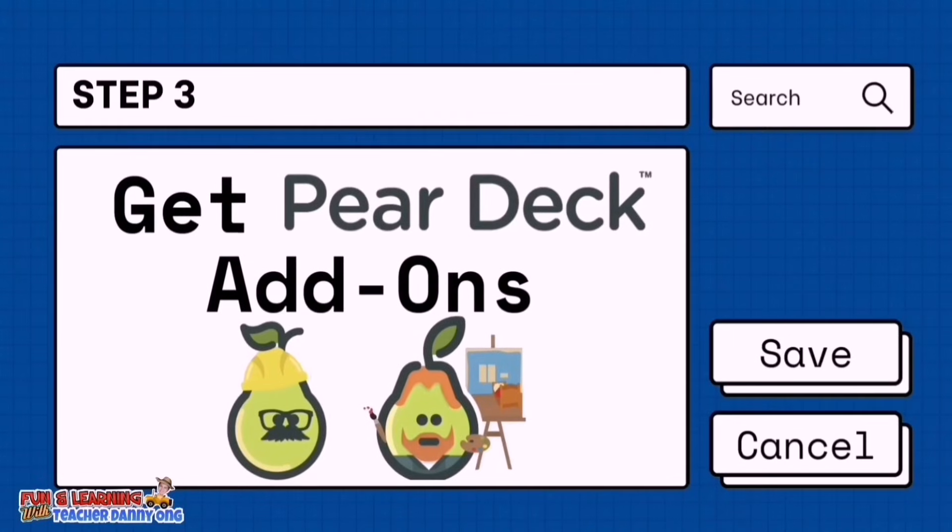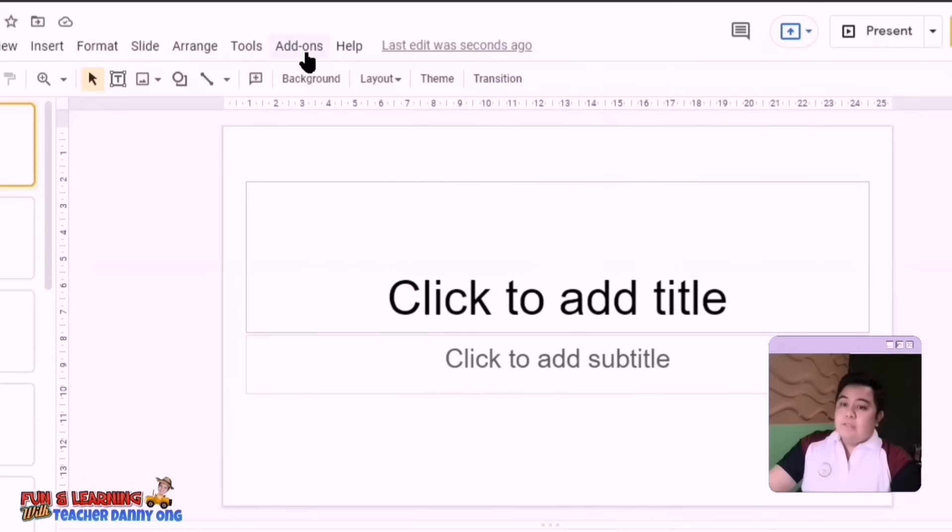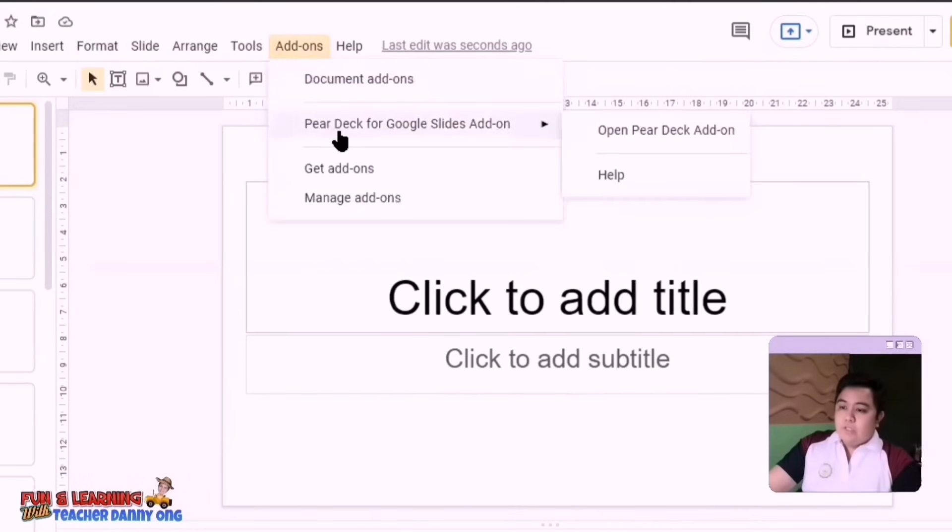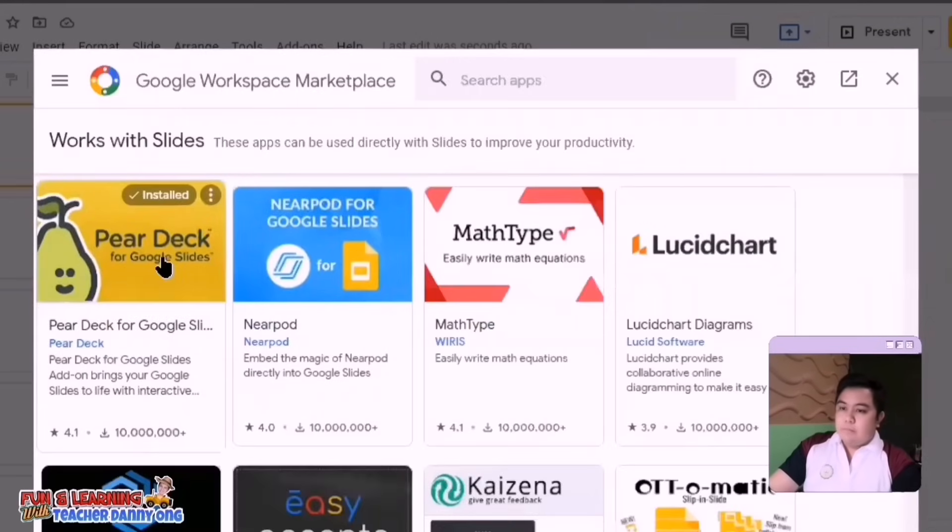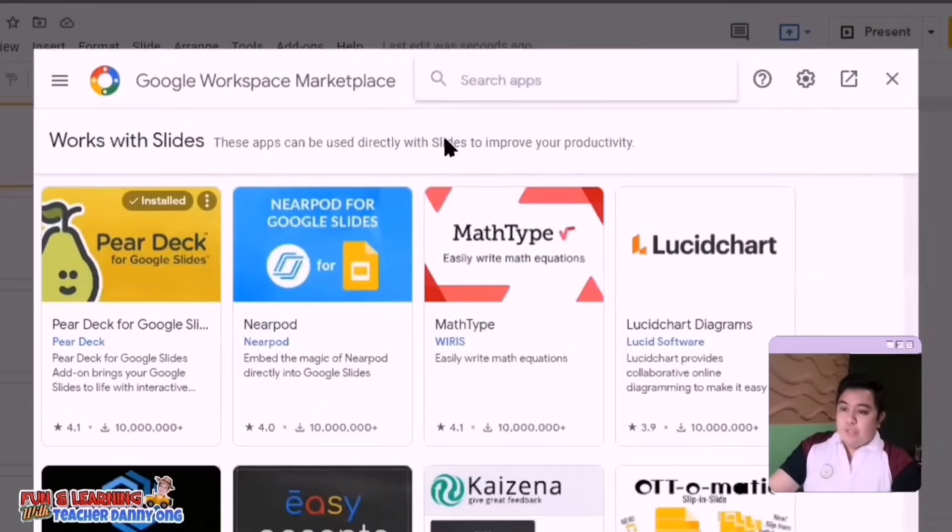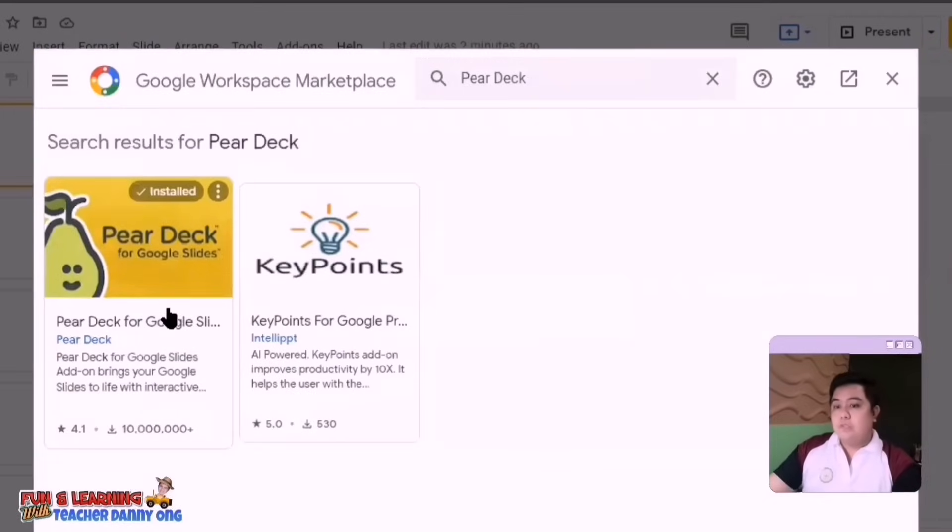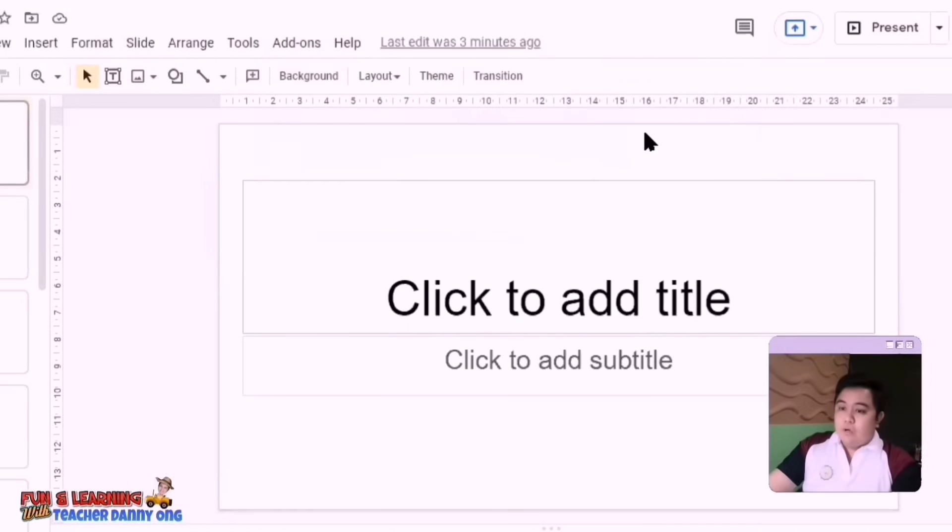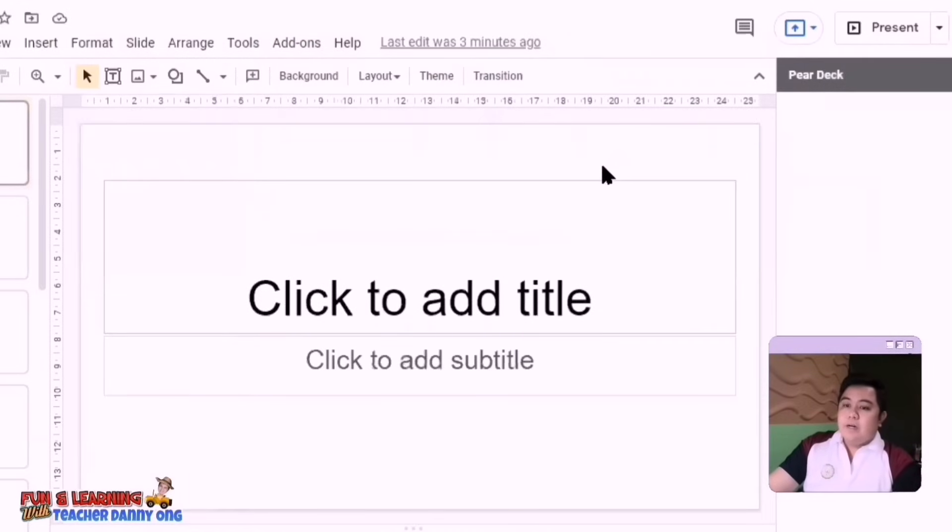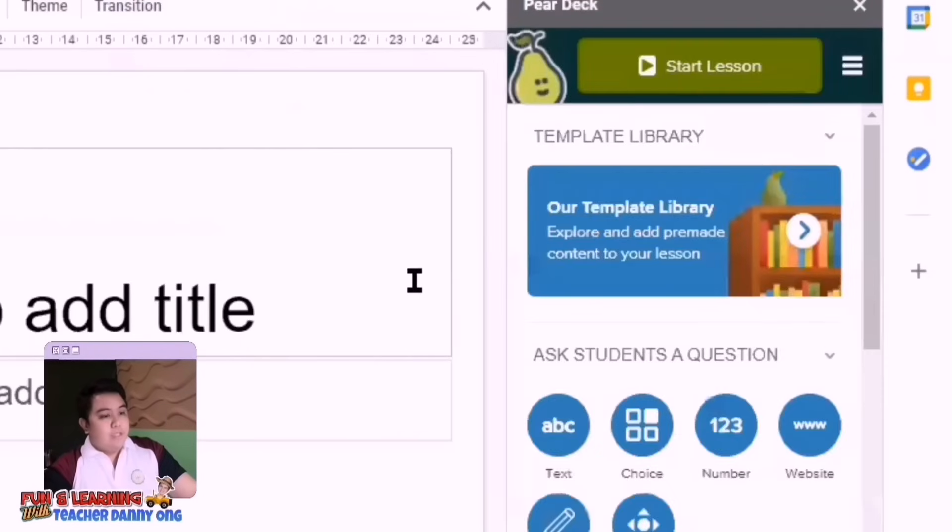Step three is to get PeerDeck add-ons. To do that in Google Slides, simply go to add-ons and PeerDeck usually pops up right here. But if it doesn't, you can search for PeerDeck and press install. Then there's authentication process needed. But after you've done this process, the PeerDeck add-on will be right here in your Google Slides add-on menu.